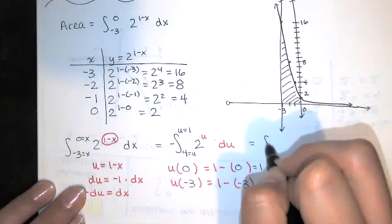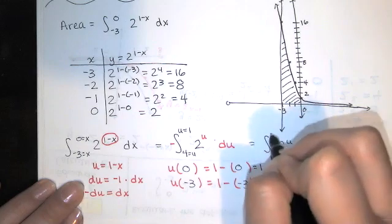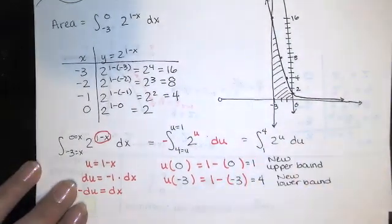So let's do that. So that would make that a positive integral of 2^u from u=1 to u=4. And then we evaluate this guy.